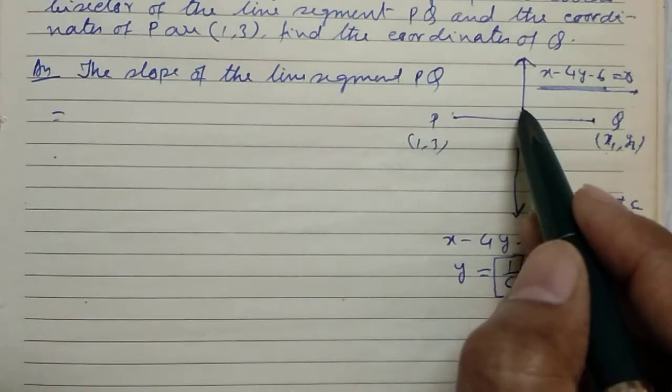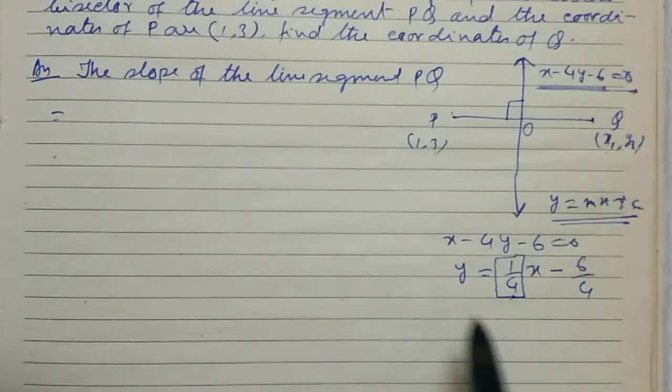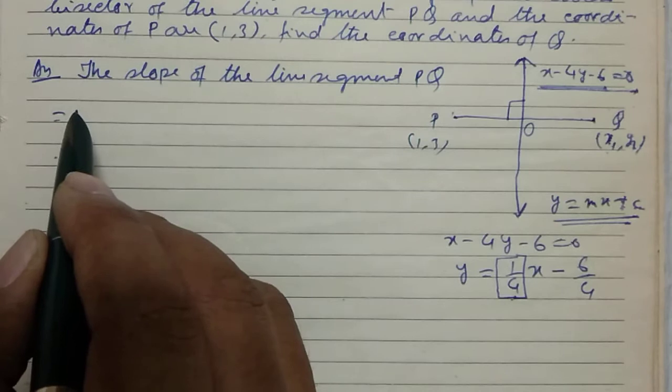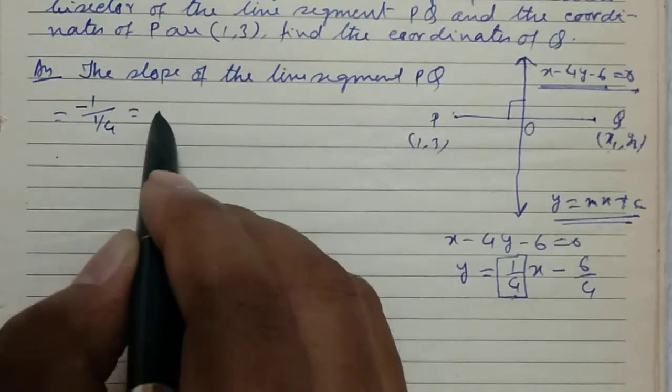Hence, the slope of the perpendicular, that is equal to minus 1 by m, equals minus 1 by 1 by 4, which is minus 4.